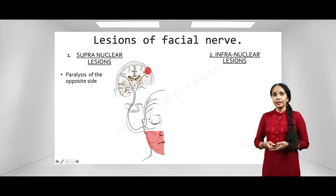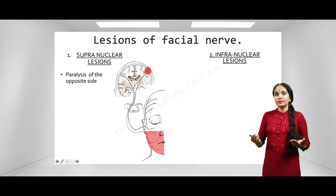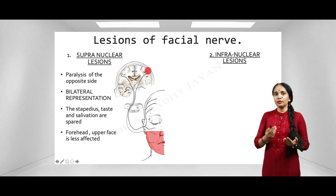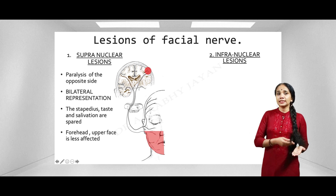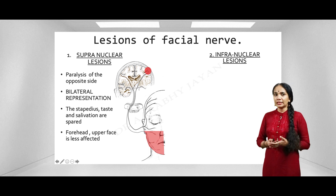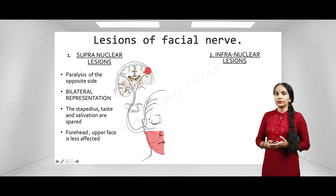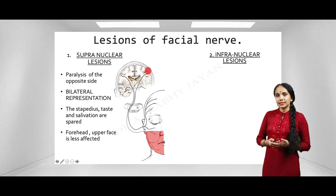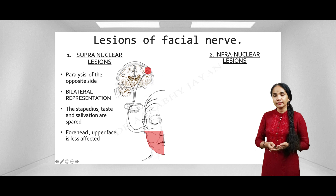The brain has made provisions for itself through something called bilateral representation — it shares some fibers with the opposite side of the brain. So when there is a lesion on one side, the opposite side compensates. Because of this, in a supranuclear lesion there is very little involvement of the forehead; paralysis only occurs in the lower half of the face. There is also no stapedial reflex loss, no hyperacusis, no loss of taste, and no loss of salivation.